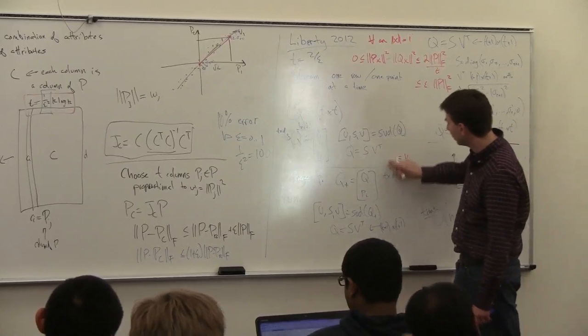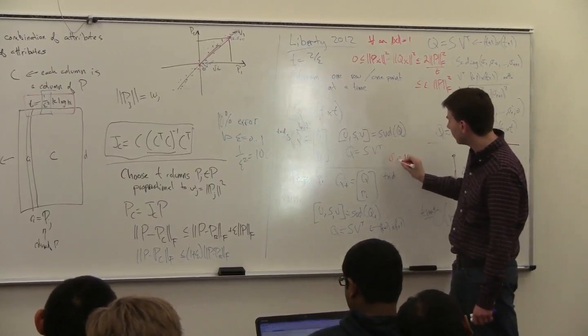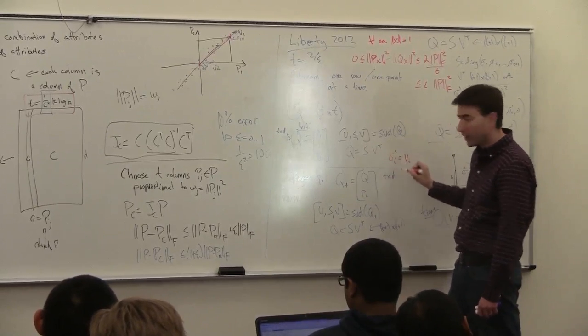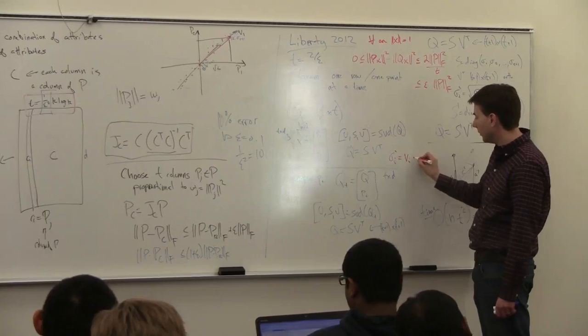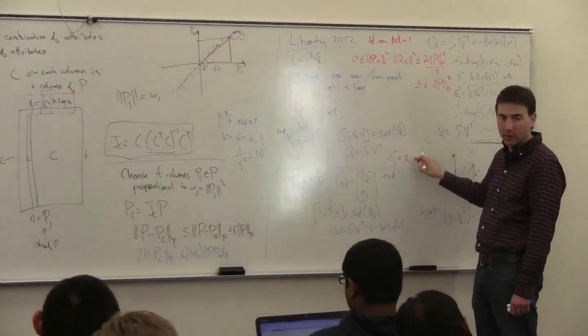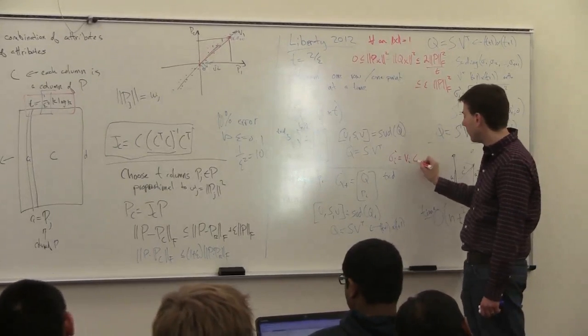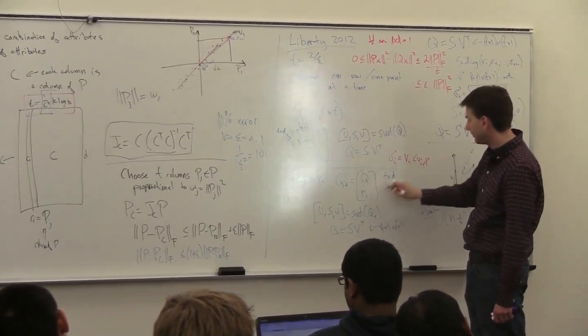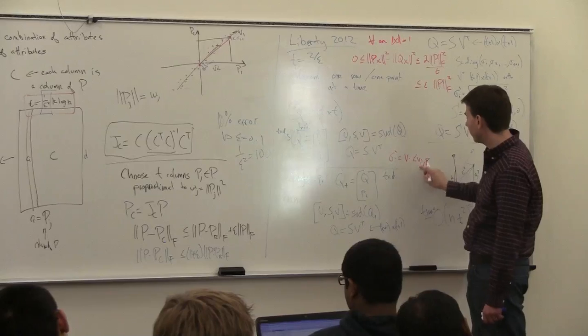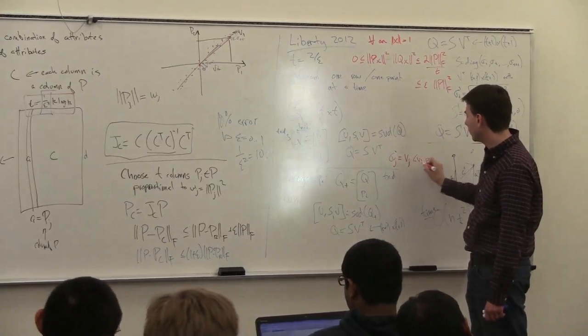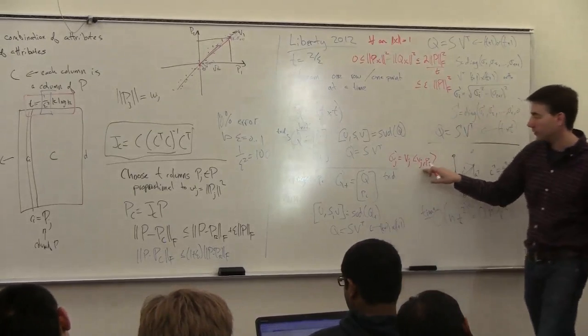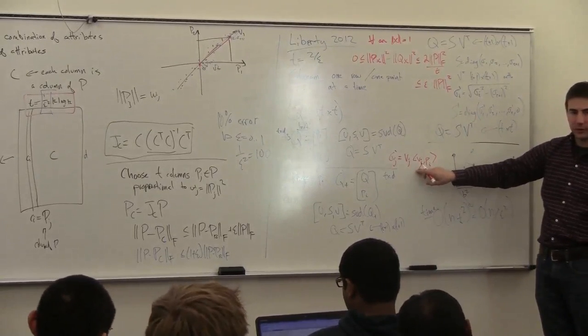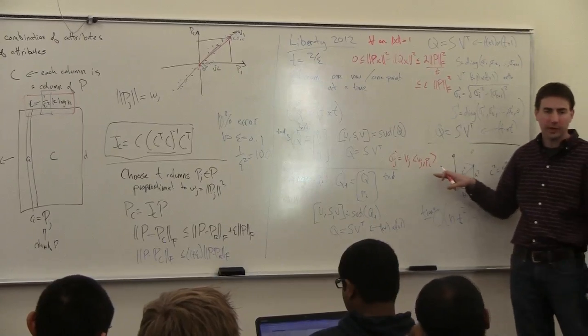But sigma I prime, which is along this, is going to be VI, which is a unit vector, times VI dot, let's use J here, times PI. So this is, this new point, this is the projection onto this direction, which is one of the directions I'm capturing.